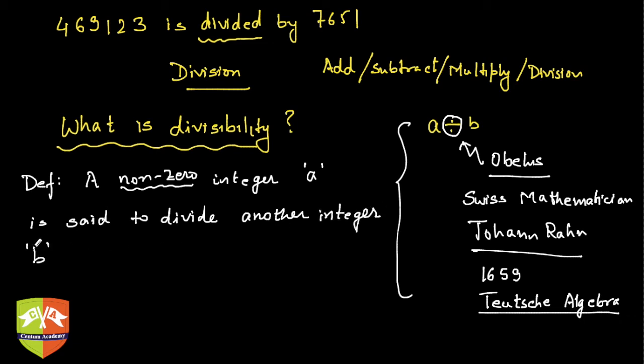If you notice, I have not used non-zero here for b - it's any integer. So a non-zero integer a is said to divide another integer b...